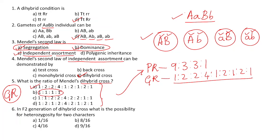Option B is the dihybrid test cross ratio, not the dihybrid ratio directly. Option C gives 1:1:2:2:4:2:2:1:1 — although it totals 16, the correct way to express the dihybrid genotypic ratio is always 1:2:2:4:1:2:1:2:1, as shown through the Punnett square using different triangles. So option A is correct.